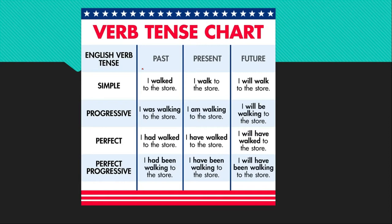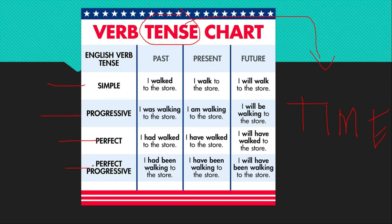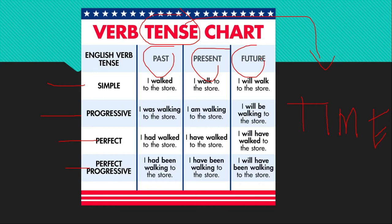In order for us to easily grasp and understand this week's lesson, let us recall first the different tenses of verbs. We have here the verb tense chart. There are different tenses of verbs. When we say tense, it talks about the time — the time when an action is done, is being done, or when it was done. We have what we call simple, progressive, perfect, and perfect progressive. Each of these verb tenses has different forms: past, present, and future.